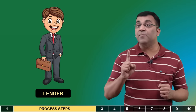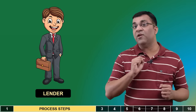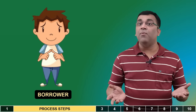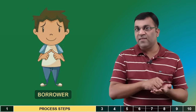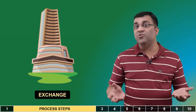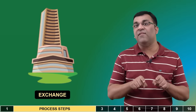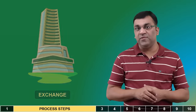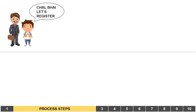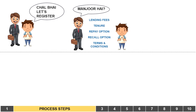There are three main participants in any SLBM process. Firstly there is the lender — the person with shares in his or her DMAT account. Then there is the borrower who wants to use these shares on a temporary basis. And then there is the exchange, whose job is to ensure the entire transaction happens properly and within the rules. A typical SLBM process starts with the lender and the borrower registering themselves with the exchange, which generally happens through stockbrokers. Step two is where the borrower and lender mutually agree on loan terms such as tenure, interest rate, and terms and conditions.